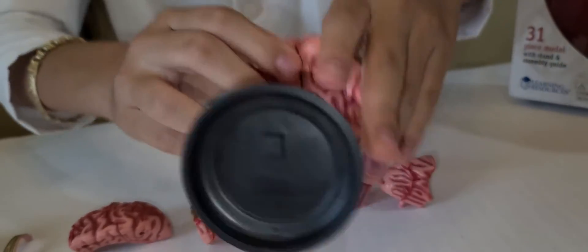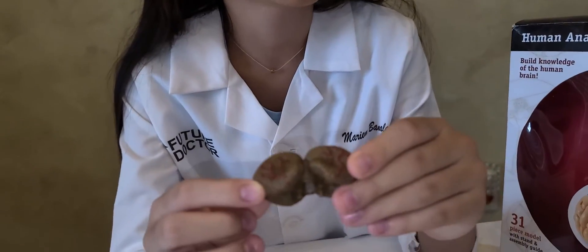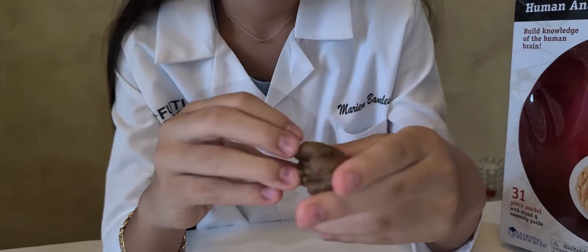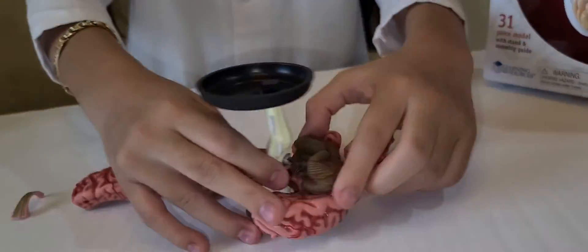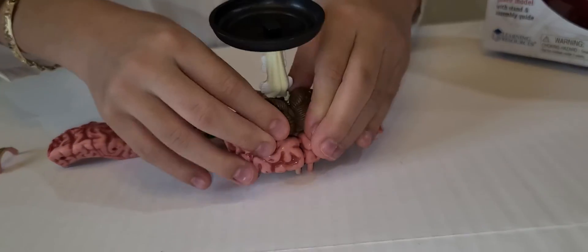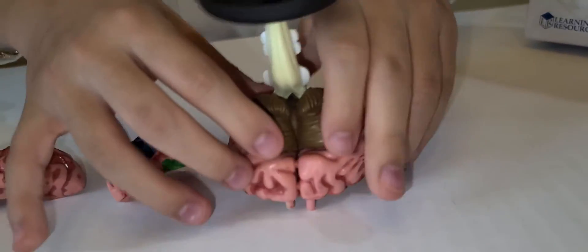So now on the bottom we'll turn it around and put the next piece which is called the cerebellum. The cerebellum coordinates body movement and maintains the body's balance. This piece I will put it right here and I will press on it so the upper piece won't fall down.